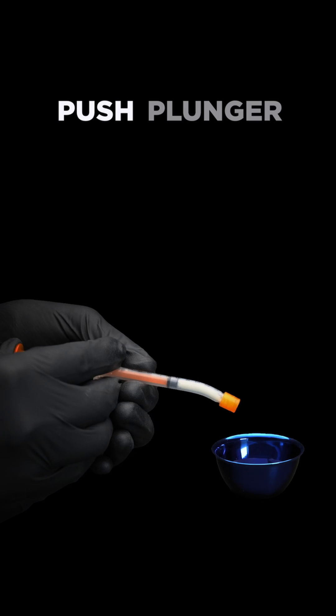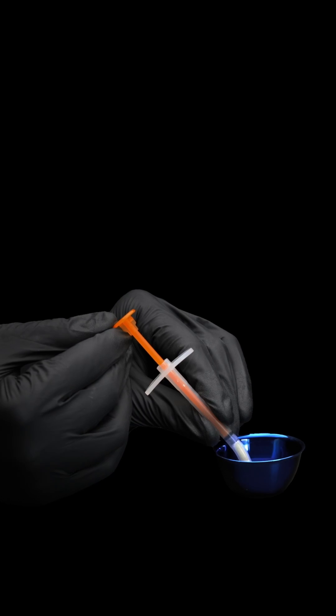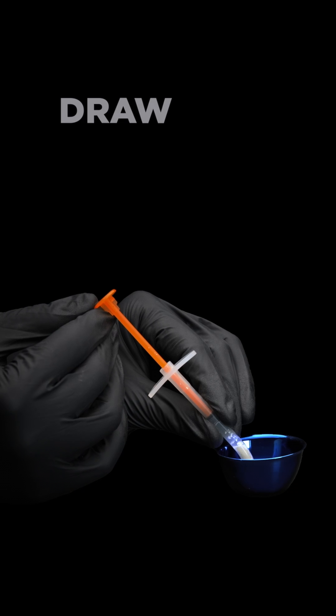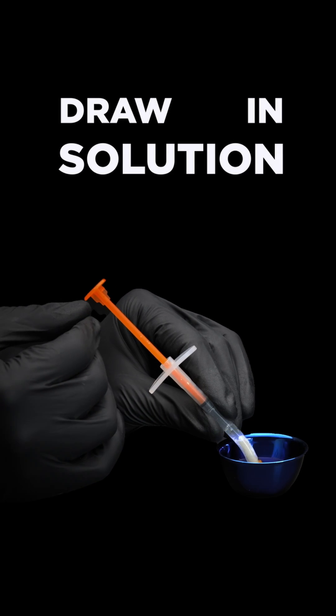Push the plunger inward to remove the excess air in the barrel. Fully submerge the orange cap into the solution and slowly pull the plunger back, drawing in the solution.